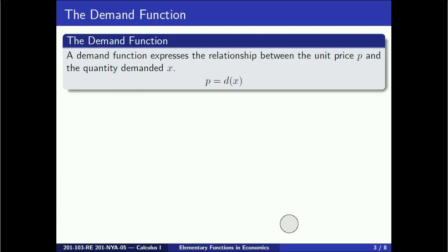Therefore, the unit price p is a function of x, and we write this as p equals d(x). Typically, the demand increases when the unit price decreases. This makes sense, since with a cheaper price there are probably more people that will want to buy the product. So the function d is usually a decreasing function.